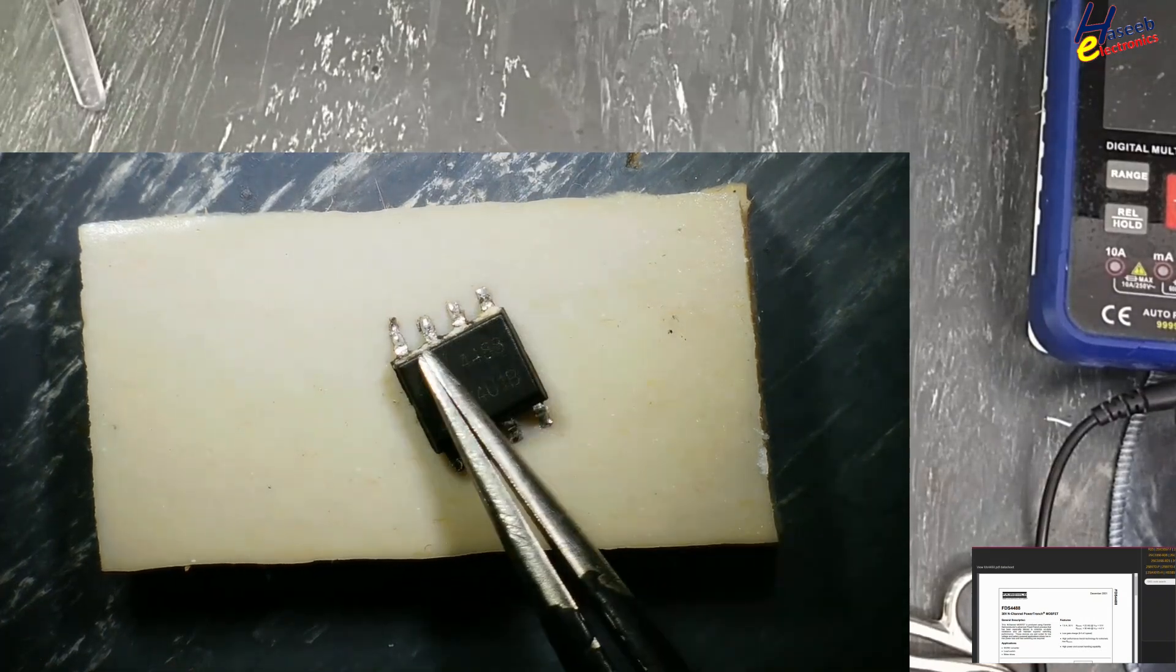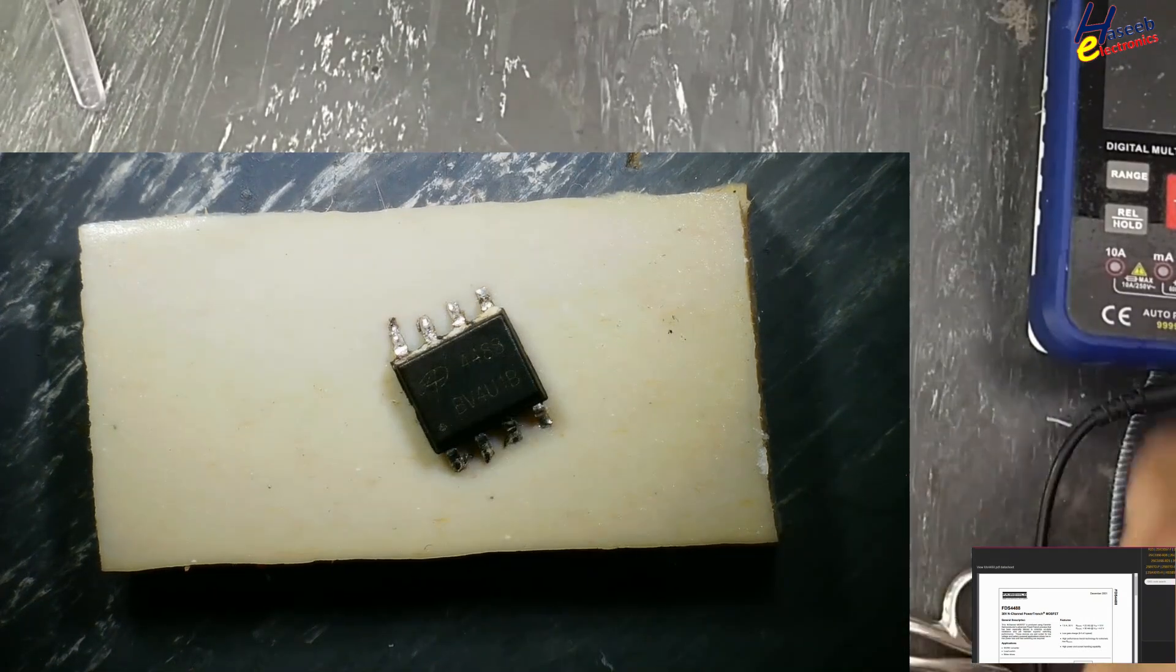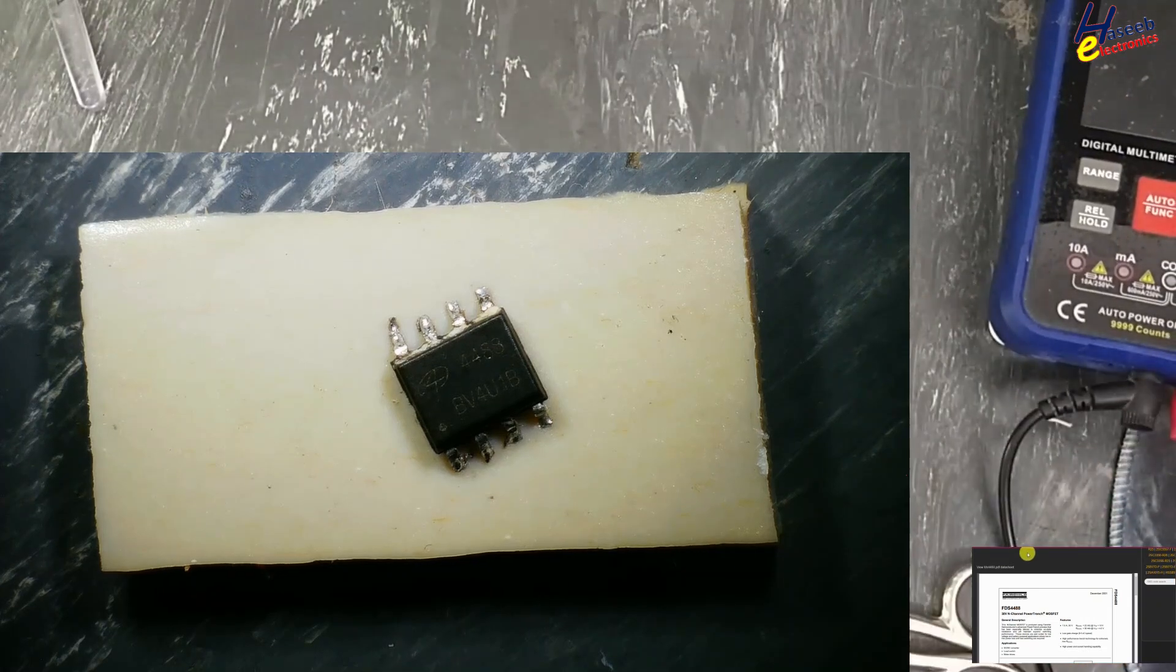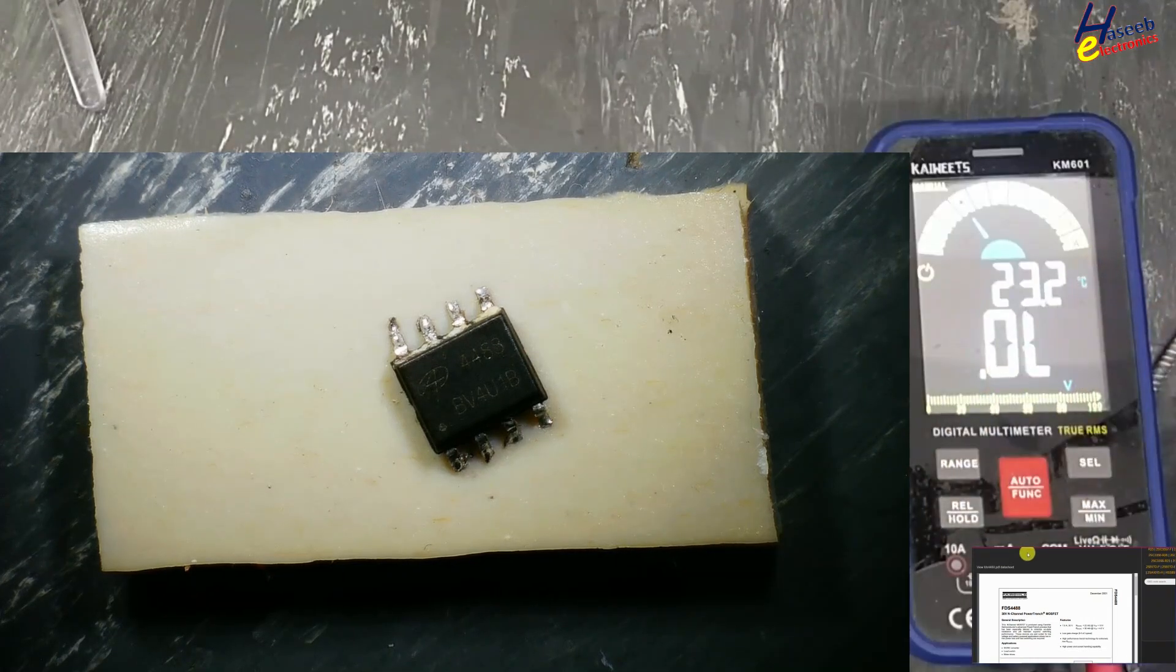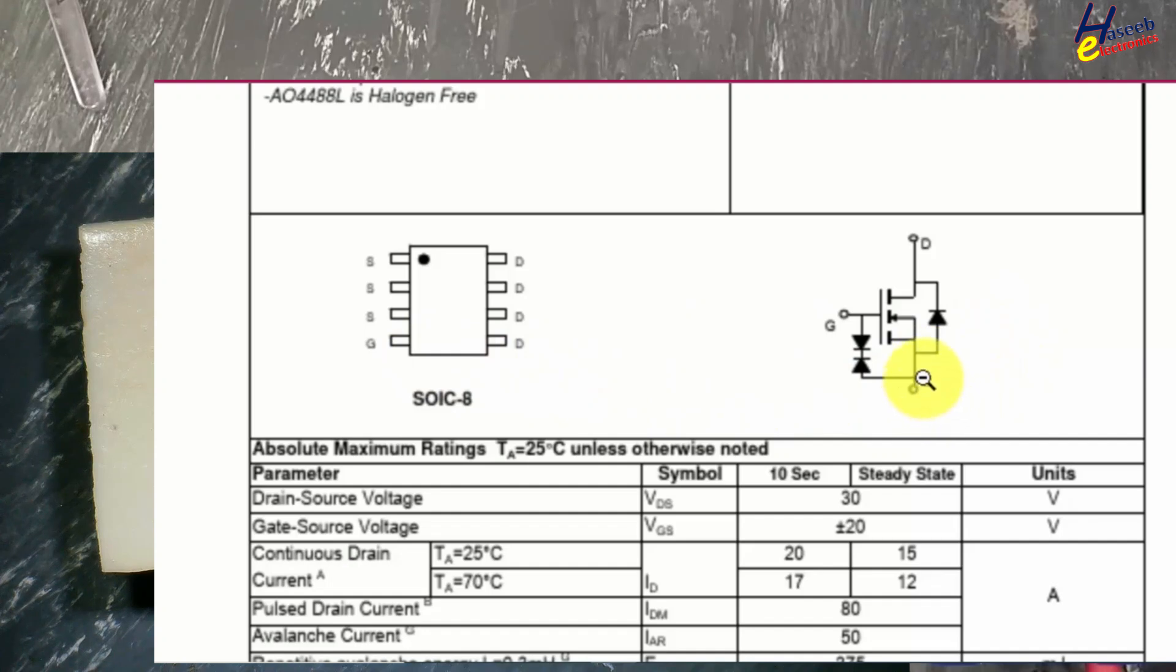When we test this MOSFET with multimeter, we will be unable to test it. Set multimeter to diode mode. There is a parasitic diode from source to drain between pin number 1 and other side pins.